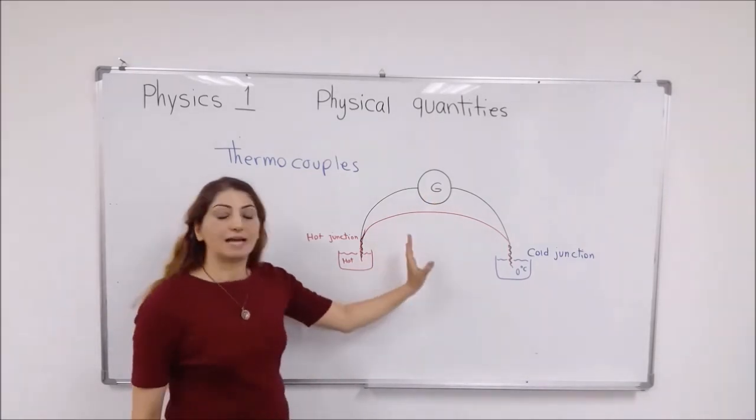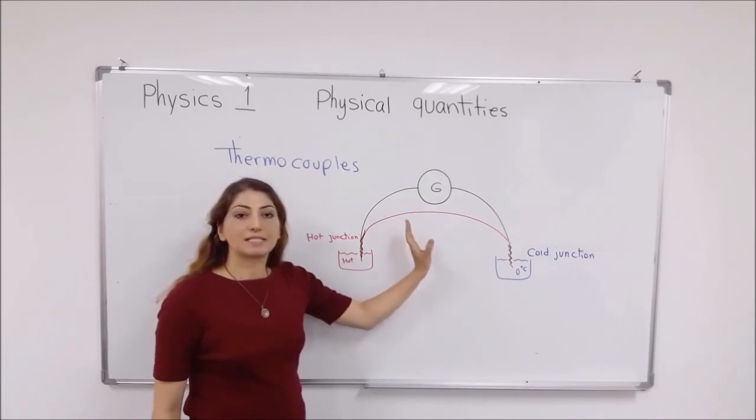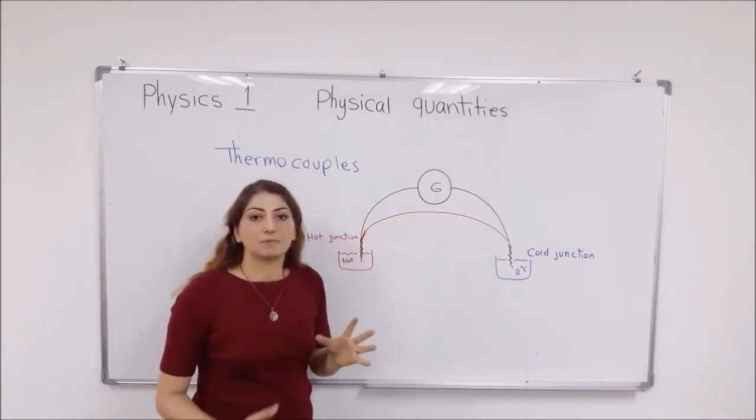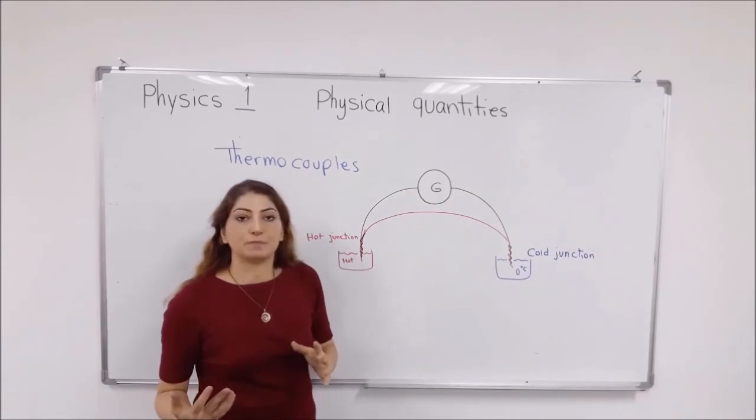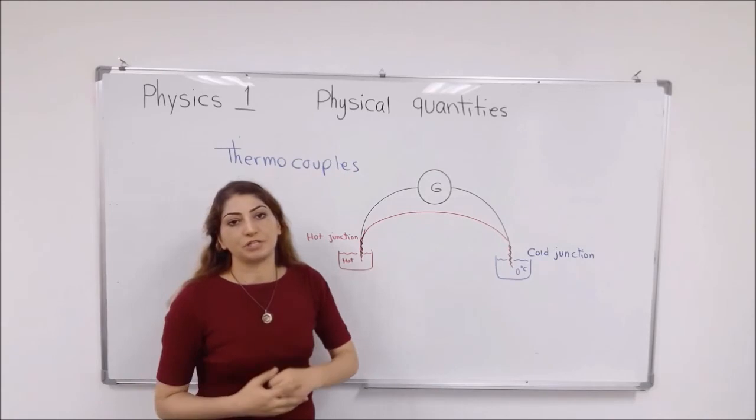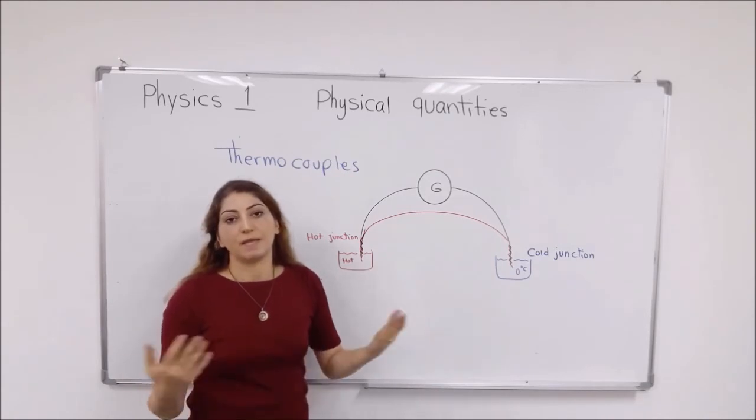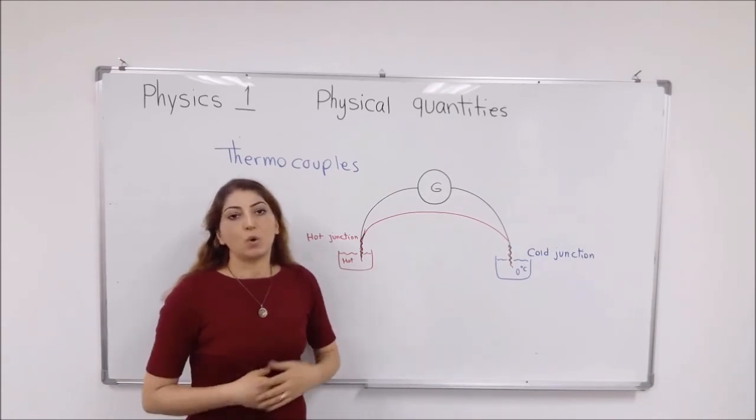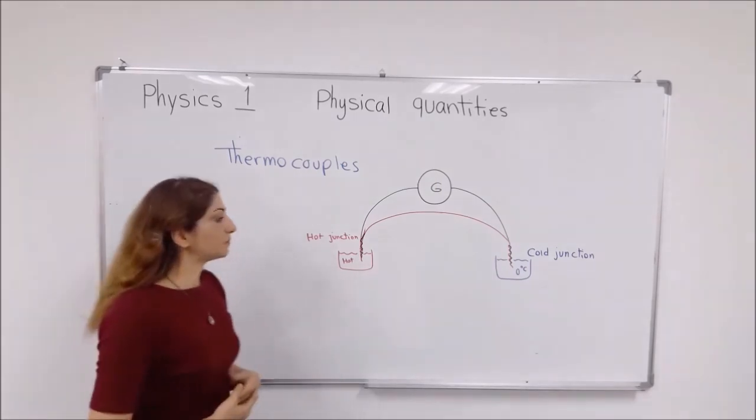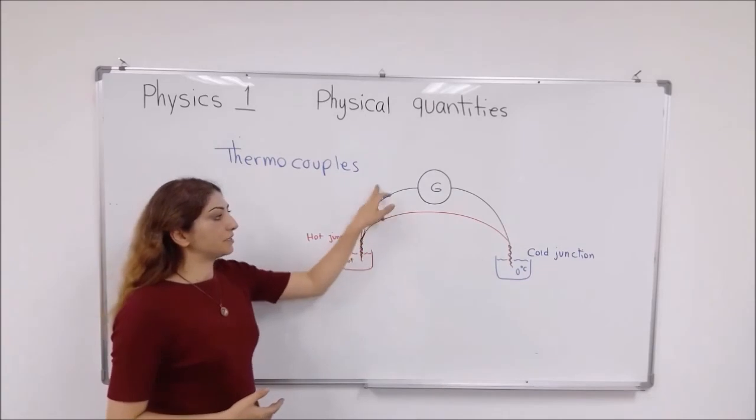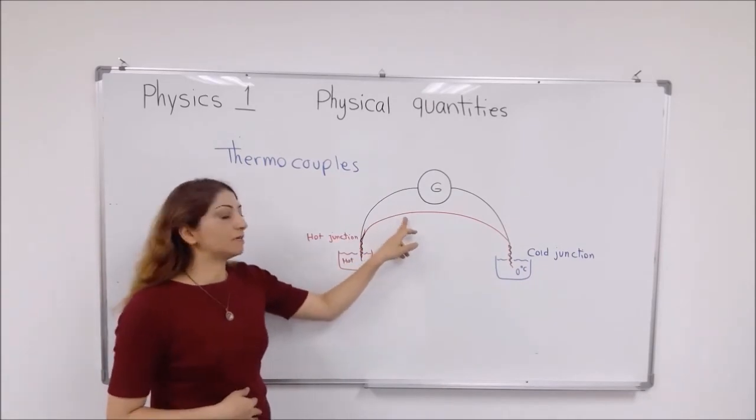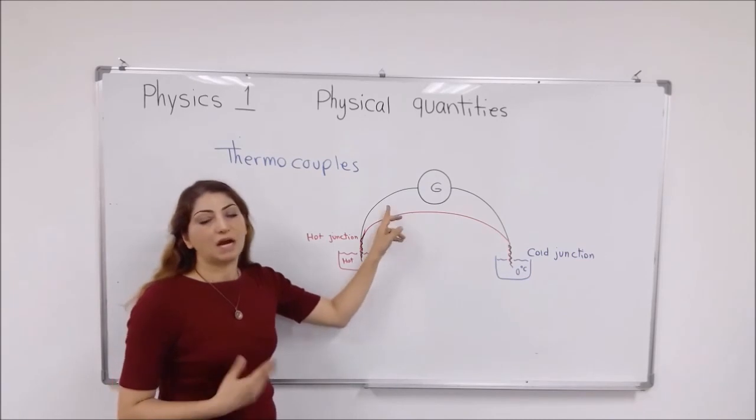After that, you can translate this voltage or the resistance back into the temperature by bringing it onto the calibration curve or calibration table. So easily you can know what is the difference between the temperature of these places. So these two wires are made of different materials. For example, one can be copper, one can be iron.